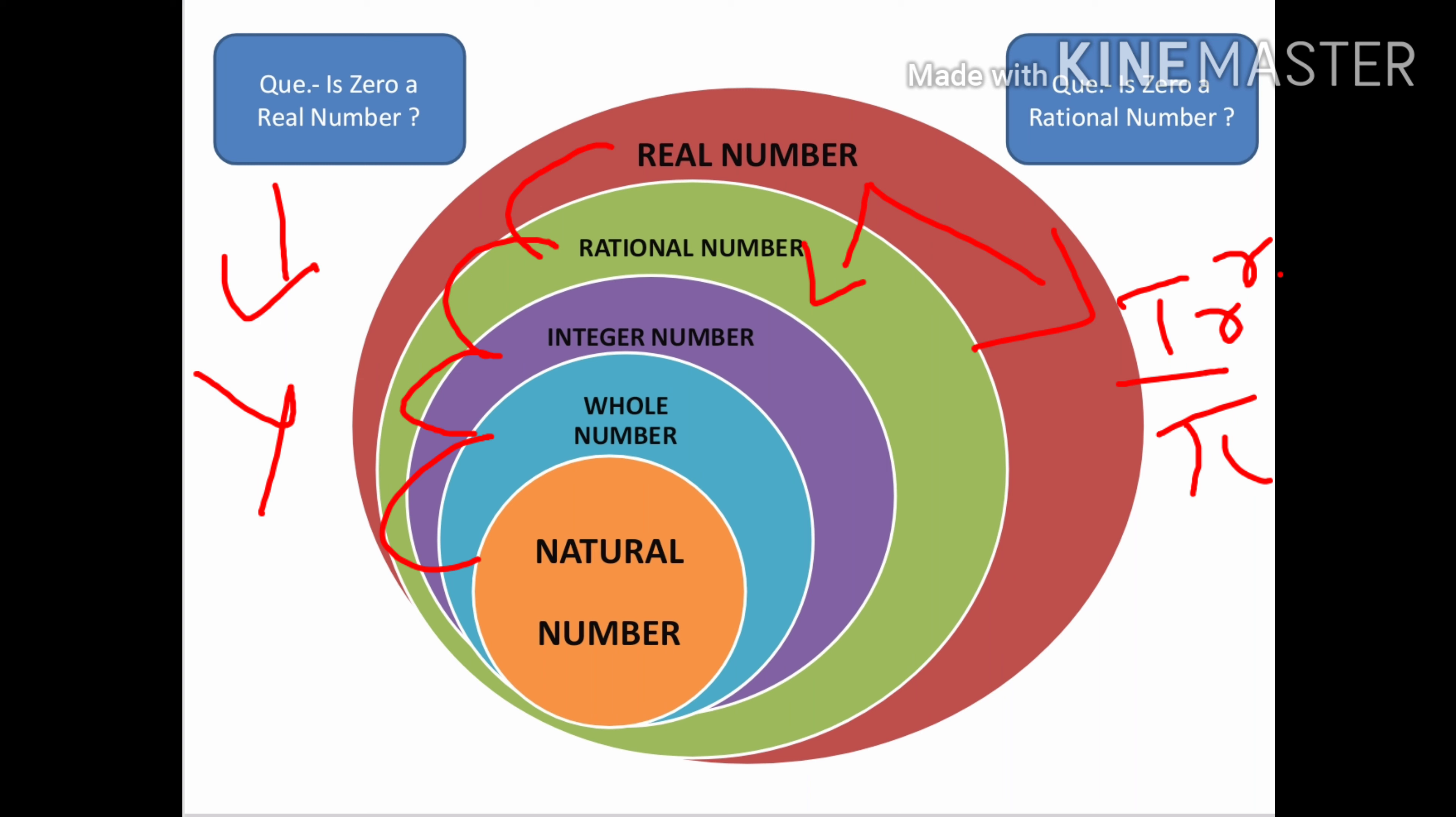You need to remember this: natural numbers are in whole numbers, whole numbers are in integers, integers are in rational, and rational is in real numbers. Natural is positive one, two, three excluding zero. Whole is zero, one, two, three. Integers include both whole and negative. Rational includes all of these, and real includes everything.